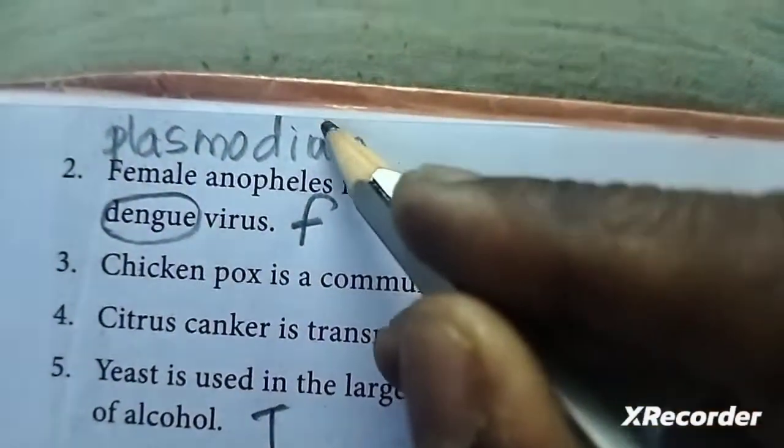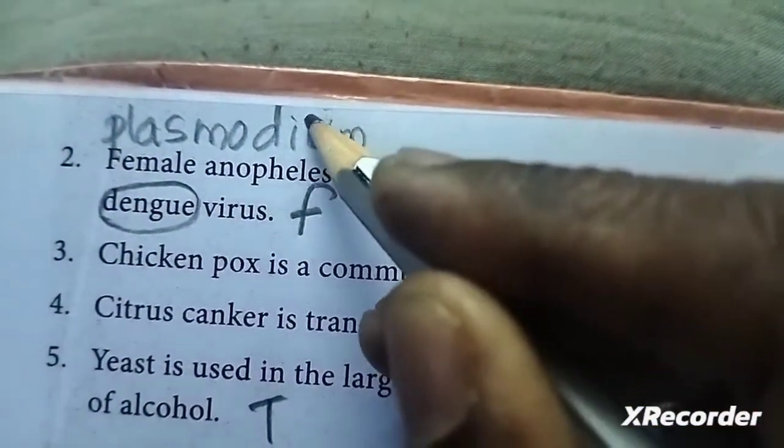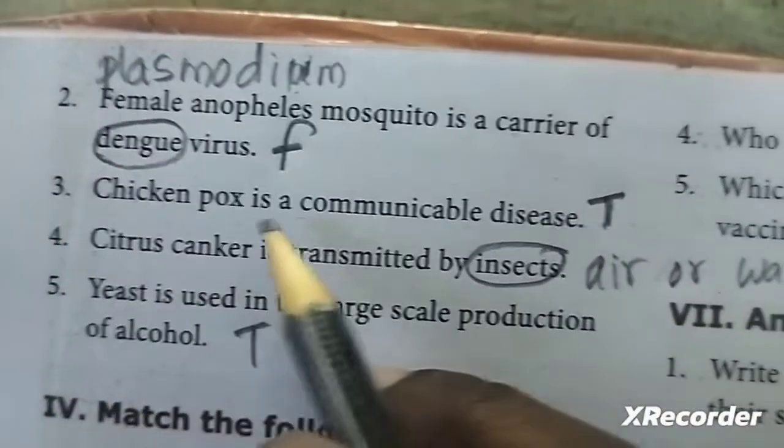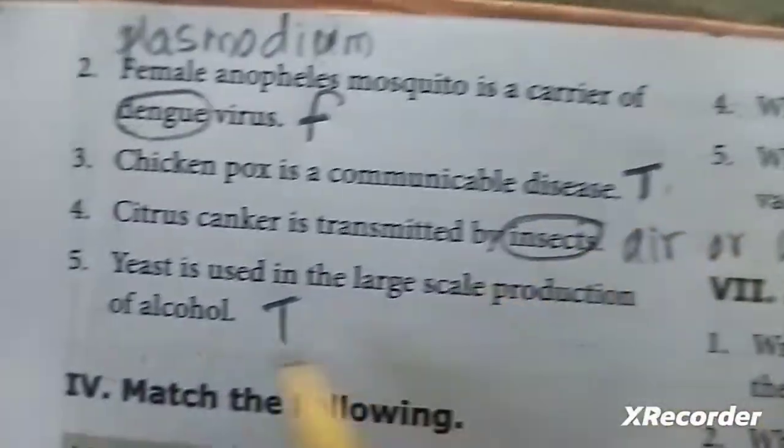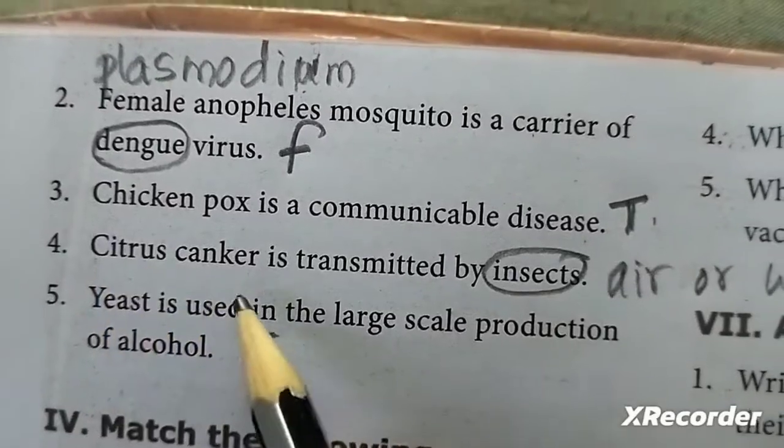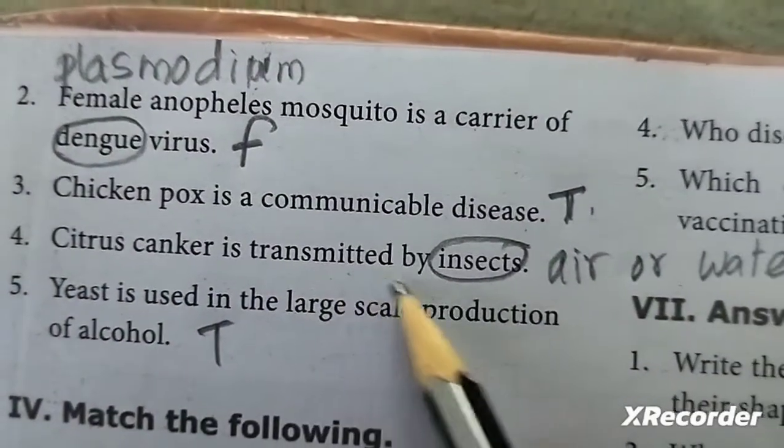The answer is false. Chickenpox is a communicable disease. Third: cider or vinegar is transmitted by insect.